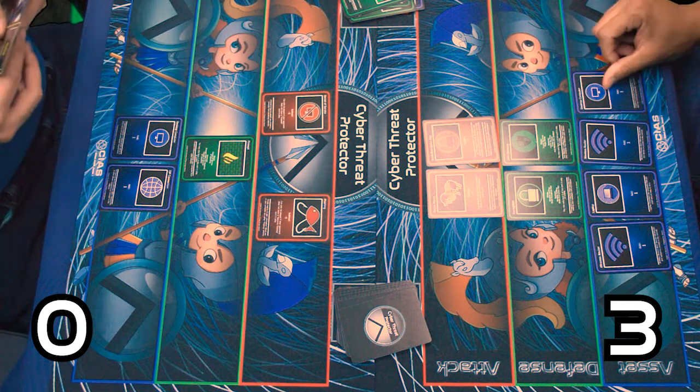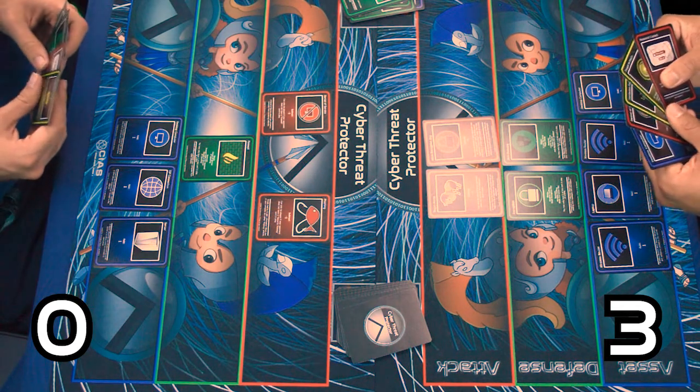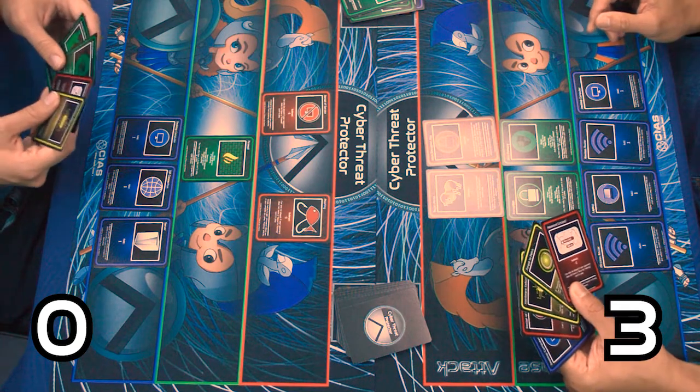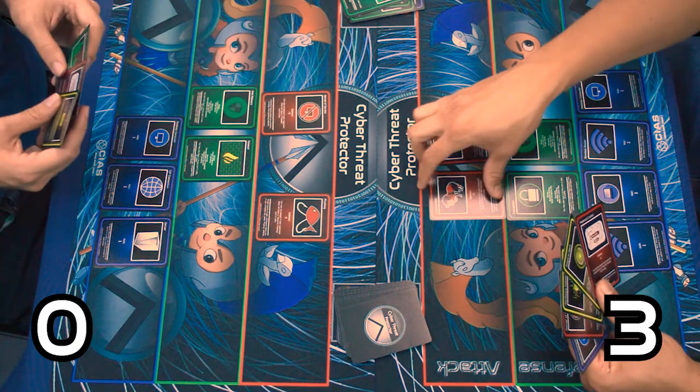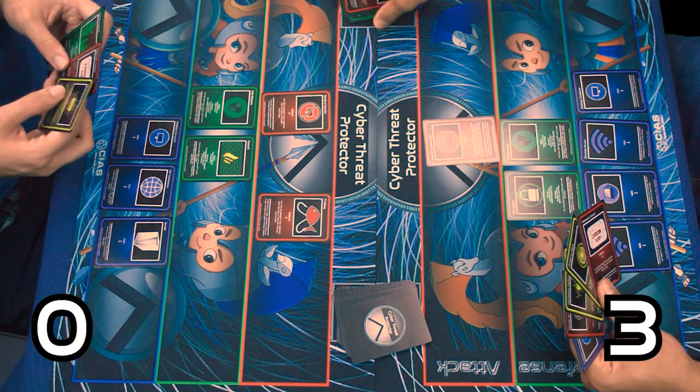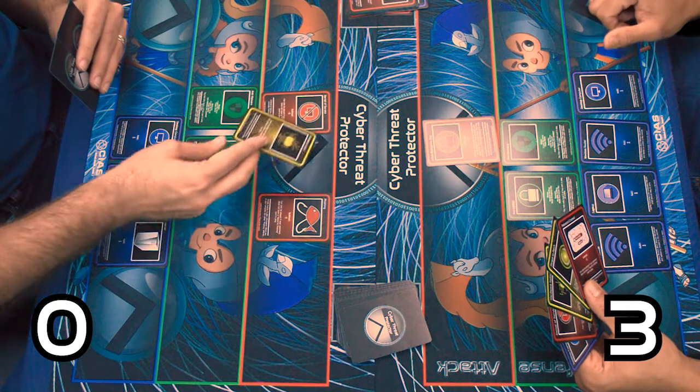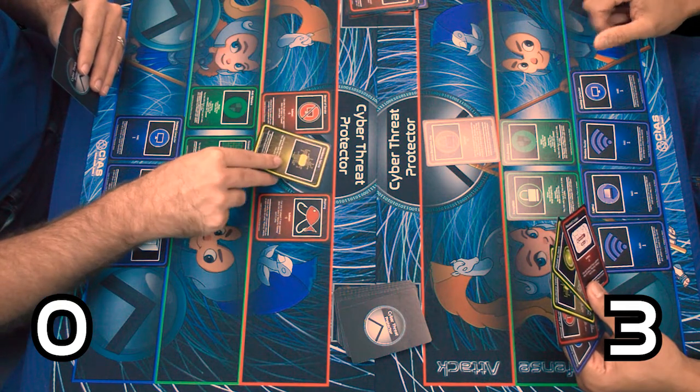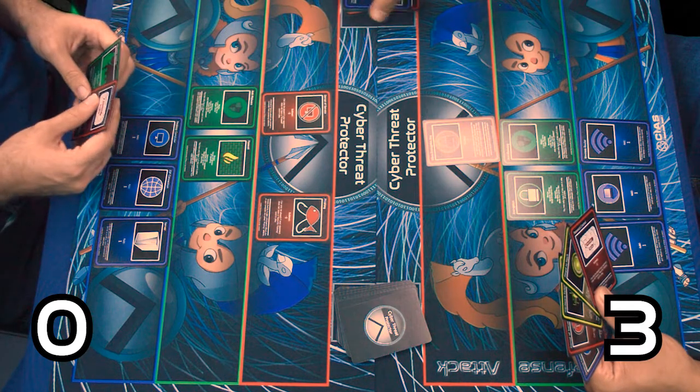All right. Let's try to get me some more points. Let's play another anti-malware to remove that Trojan horse. And lastly, let's do a hardware failure to destroy one of your assets. Let's get rid of that computer there. And that's the end of my turn.